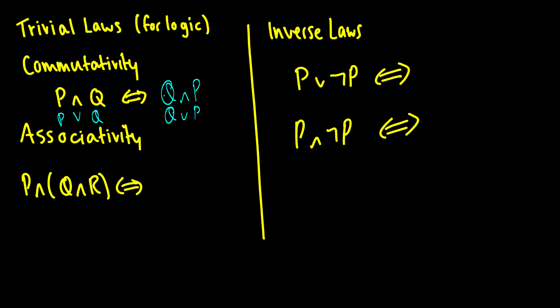Associativity means that we can move brackets around. So, we can have P and Q and R with P and Q in brackets instead of Q and R in brackets. Similarly, if we have P or Q or R, this is the same thing as saying P or Q or R. Again, we can just move brackets around. Really not that impressive.